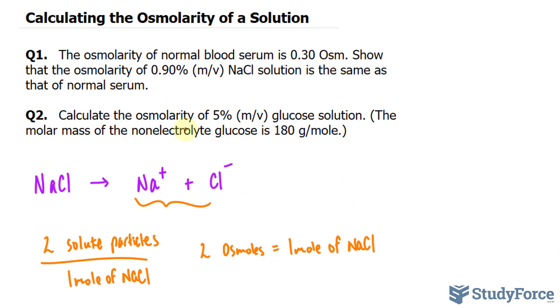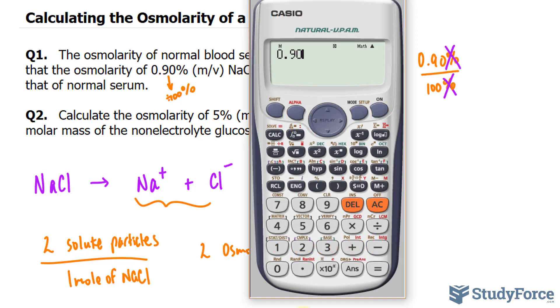Now another thing that we need to keep in mind is that 0.90% is the concentration for this solution and it's mass per volume. All percentages can be converted into a fraction by dividing the percentage by 100%. So if I divide 0.90% by 100%, it's no longer a percentage. Using our calculator, 0.90 divided by 100 is equal to 9 over 1,000.